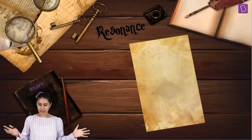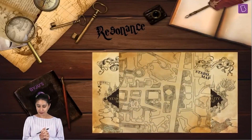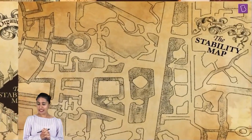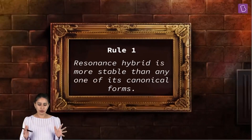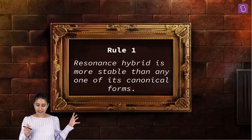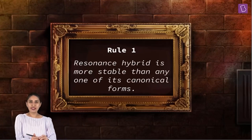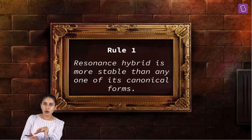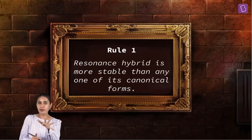When we talk about resonance, the stability map is of the greatest relevance. Rule number one is the most simple rule: the resonance hybrid is more stable than any of its canonical forms. I don't even consider this a rule — it's obvious. The resonance hybrid has the least energy out of all the resonating structures, so needless to say, it is the most stable out of all the resonating structures.